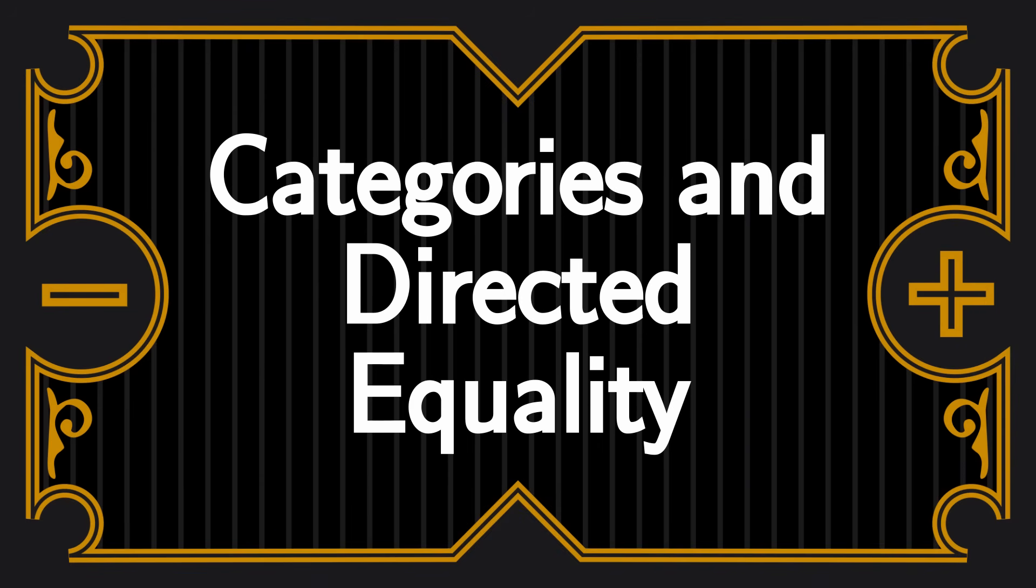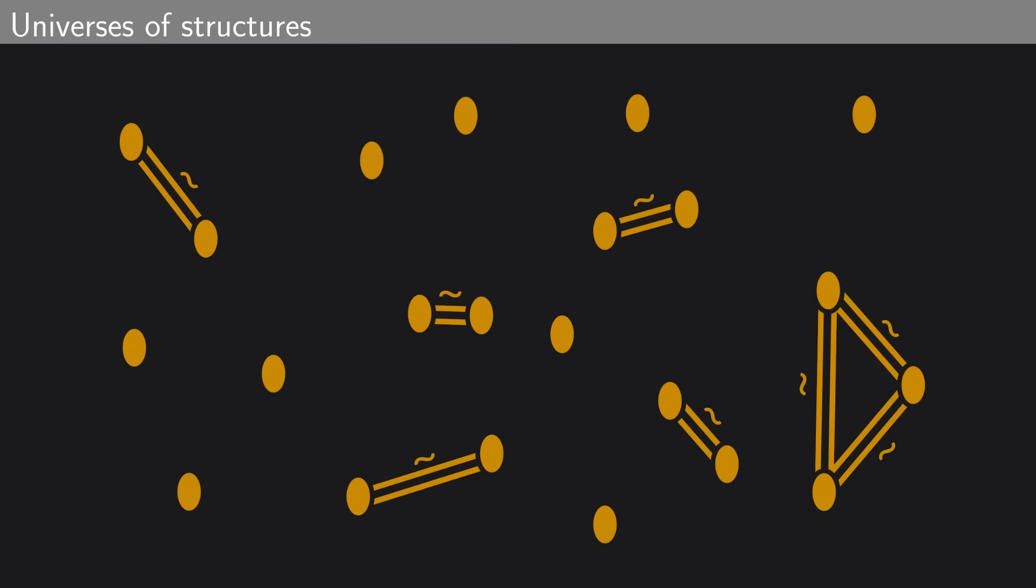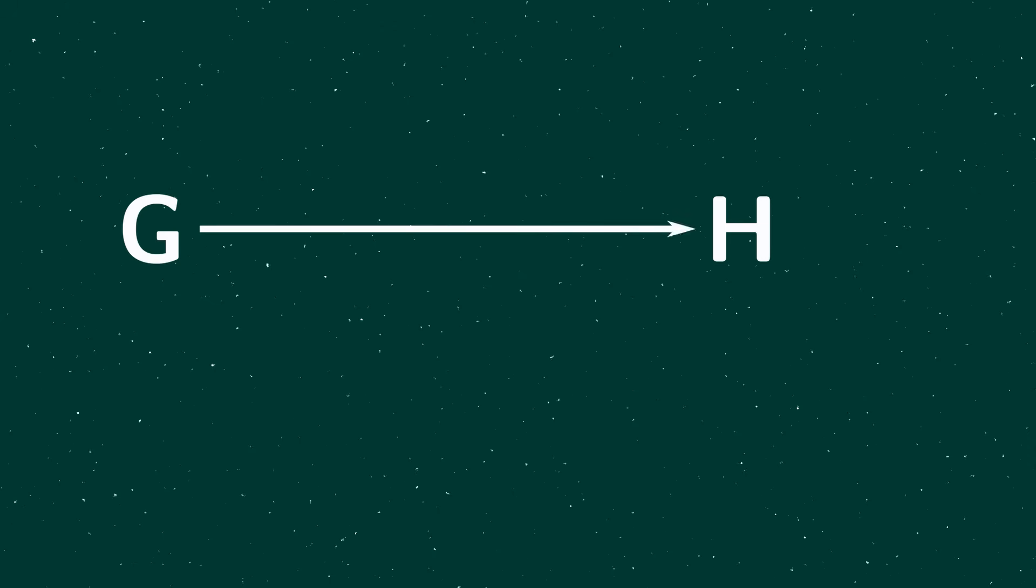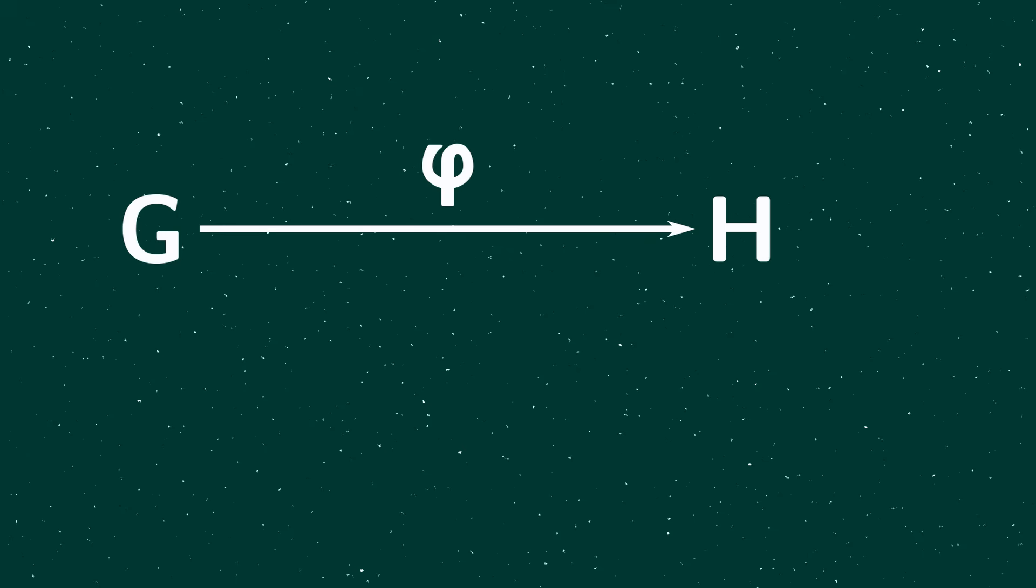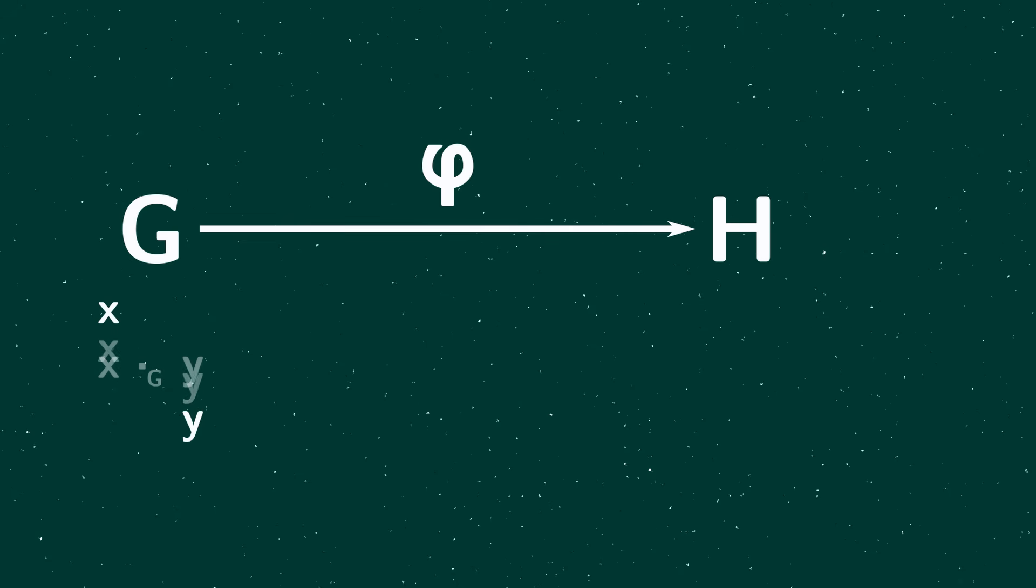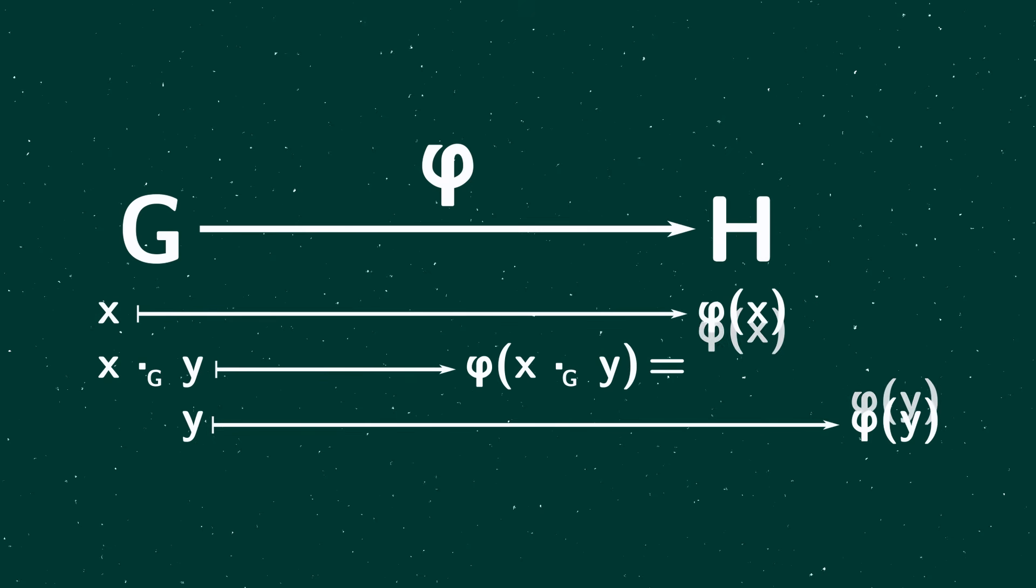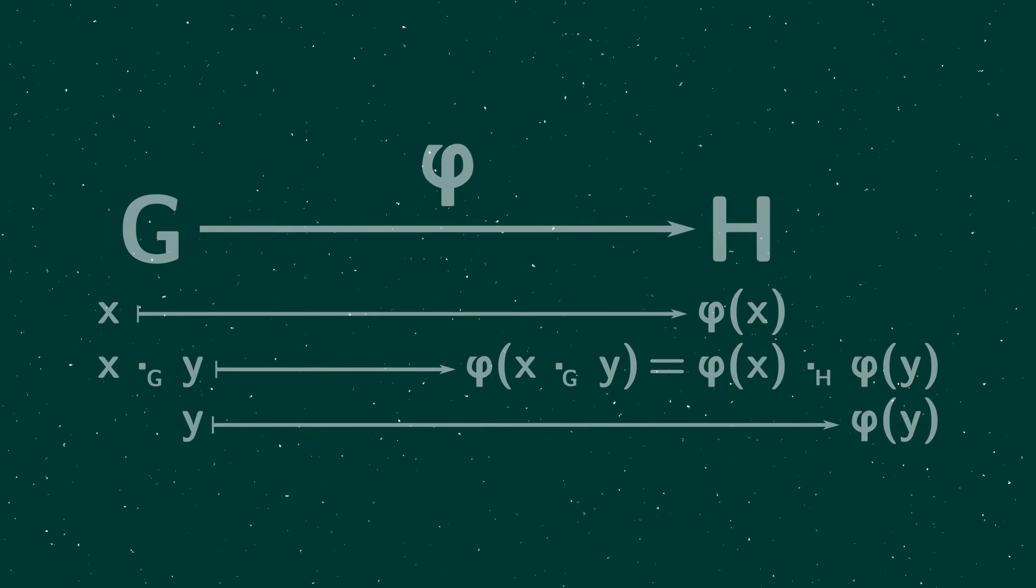So now we get to the category theorists. Category theory is also based on the idea of viewing mathematical disciplines, like group theory or topology, as exploring their respective universe of structures. But for category theorists, it's not the isomorphisms that are fundamental, but homomorphisms. Homomorphisms are functions between structures which respect the structure in the appropriate way. If I have two groups, G and H, a group homomorphism from G to H is a function which respects the group operations. If I combine X and Y with the group operation of G and apply the function to the result, that's the same thing as applying the function to X and Y separately and then combining them with the group operation of H. A homomorphism of topological spaces is a continuous function. And so on.